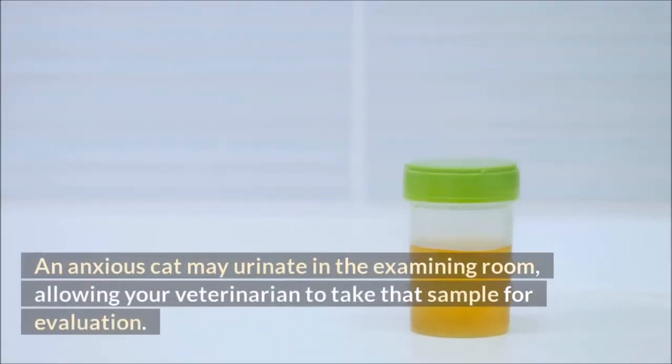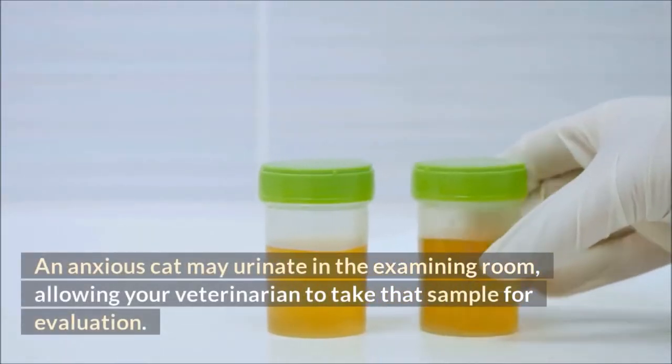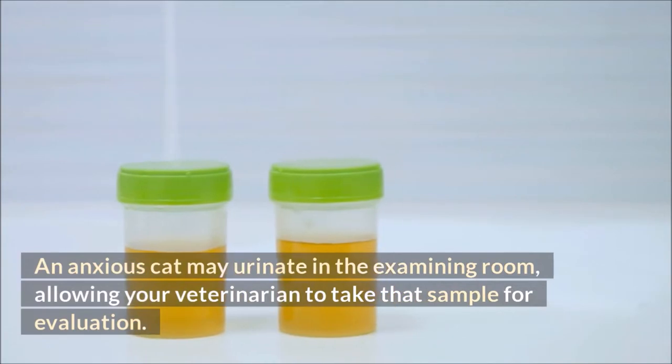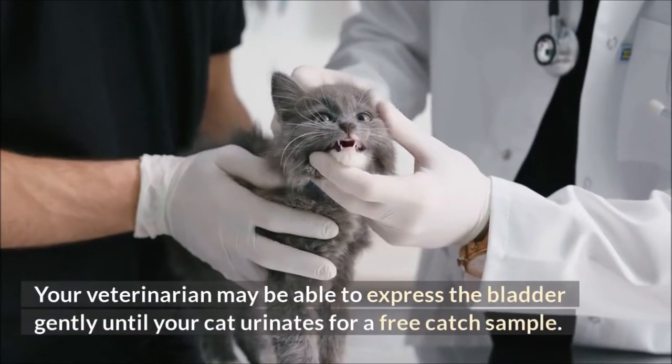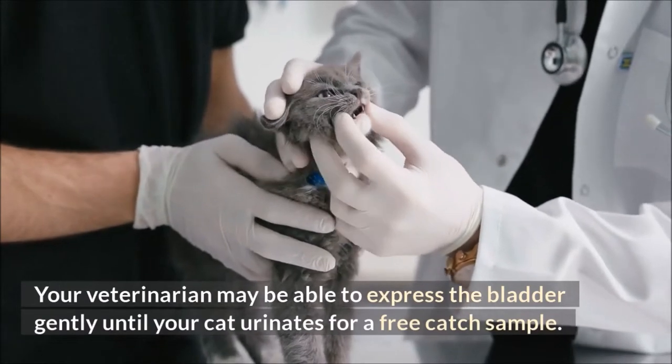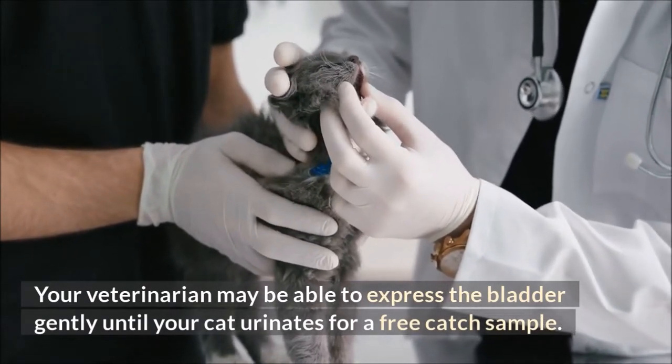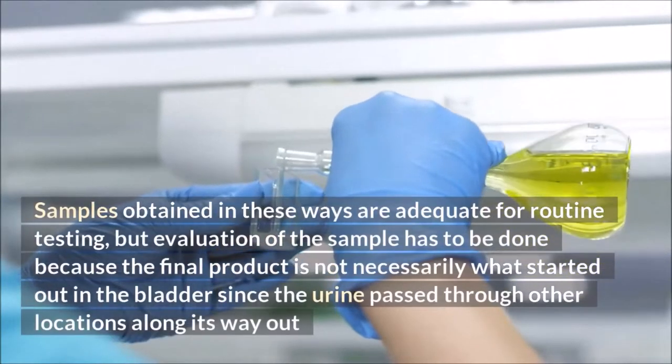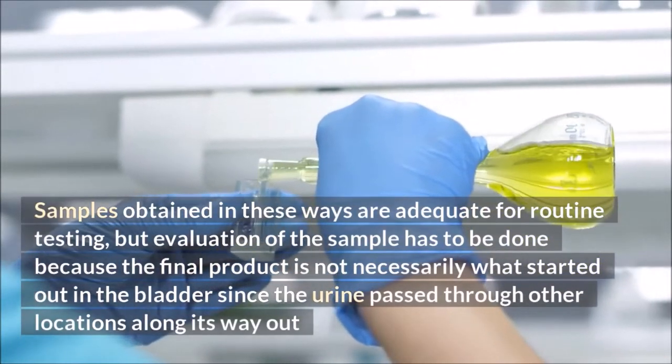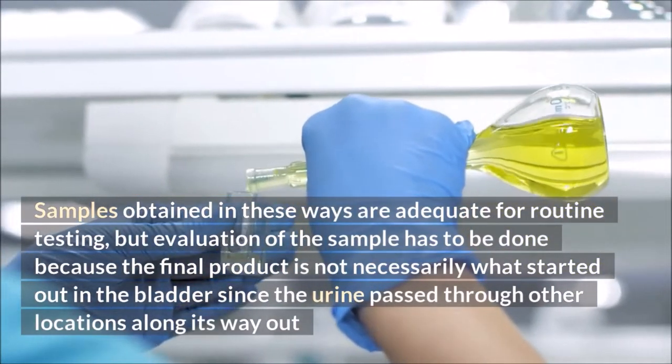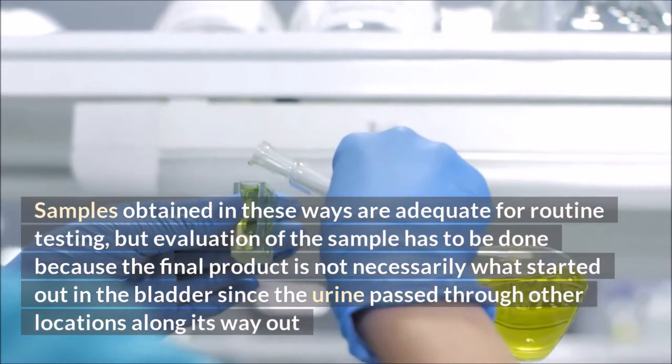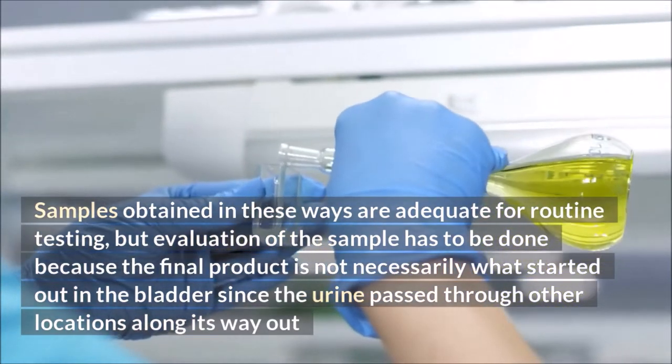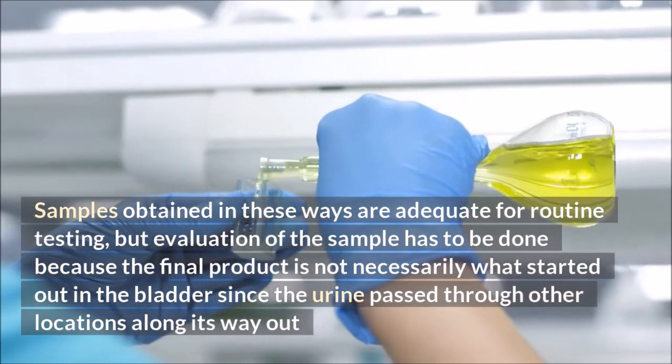An anxious cat may urinate in the examining room, allowing your veterinarian to take that sample for evaluation. Your veterinarian may be able to express the bladder gently until your cat urinates for a free catch sample. Samples obtained in these ways are adequate for routine testing, but evaluation of the sample has to be done because the final product is not necessarily what started out in the bladder, since the urine passed through other locations along its way out.